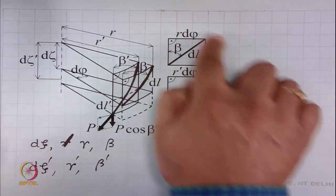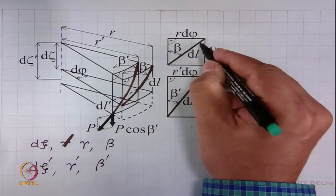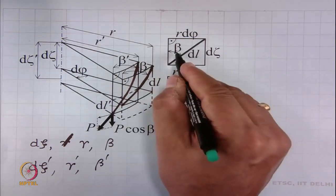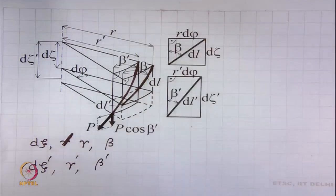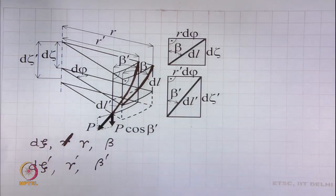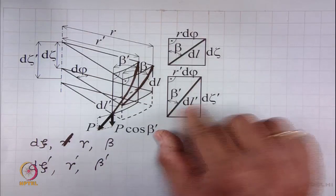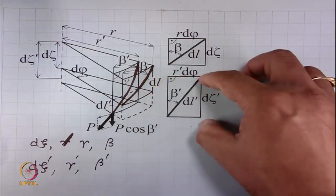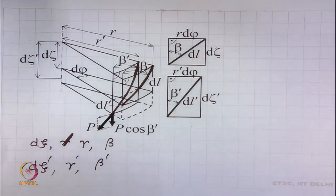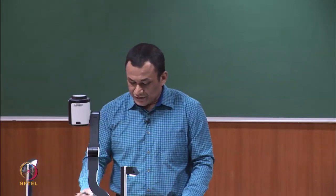Looking at the top picture: the fiber element has length dl, angle beta to the yarn axis, width r·dφ, and axial distance d-zeta. After elongation, the fiber element changes position. The length becomes dl-prime, the angle becomes beta-prime, the width becomes r-prime·dφ, and the axial distance becomes d-zeta-prime.